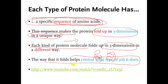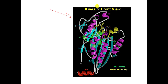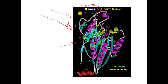So every protein molecule folds up in its own special way in 3D. This is the three-dimensional shape of one specific protein molecule called kinesin. Kinesin is a molecule in all of our cells whose job is to carry other molecules around to different parts of the cell. You can see that chemists and biologists probably spent years trying to figure out the three-dimensional shape of this specific molecule — it is not an easy thing to do.